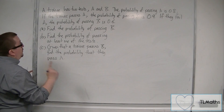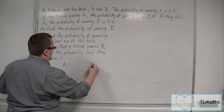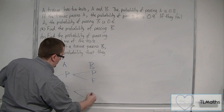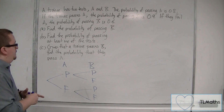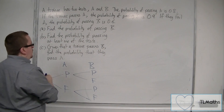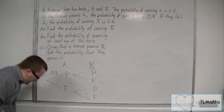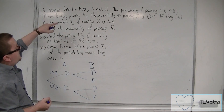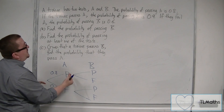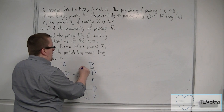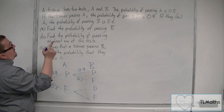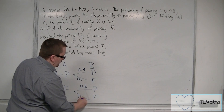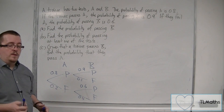We've got two tests, A and B, for which you can either pass or fail. If the probability of passing A is 0.8, then failing A must have a probability of 0.2, because those probabilities need to add up to 1. If the trainee passes A, the probability of passing B is 0.9, so failing B will be 0.1. And if they fail A, the probability of passing B is 0.6, so failing B will be 0.4. This is the tree diagram we're working from.